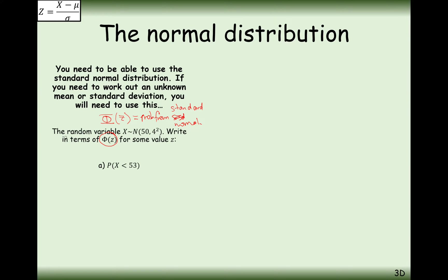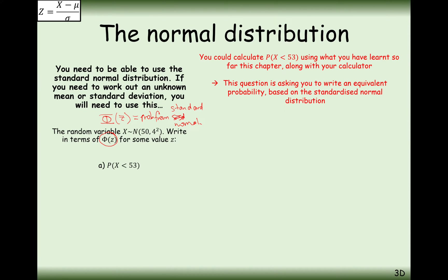Let's crack on with a question. The random variable x is distributed with a mean of 50 and a standard deviation of 4. We want to express, in terms of phi of z for some value of z, the probability that x is less than 53. In an exam you would just grab your calculator, go to the normal CD mode, type in your upper value of 53, your lower value of minus 99 — making sure it's a very low value — and then a mean of 50 and a standard deviation of 4, and the calculator would do all the work for you.